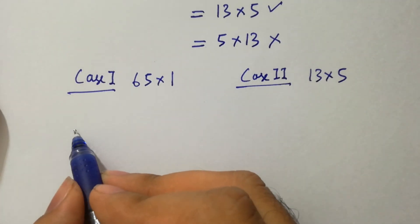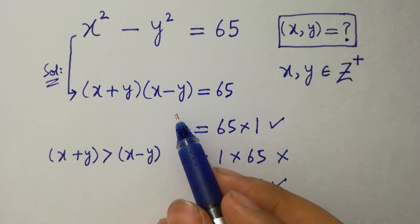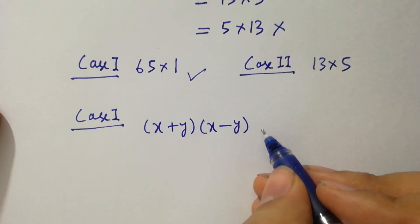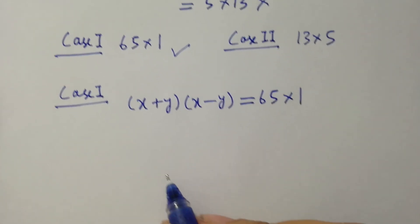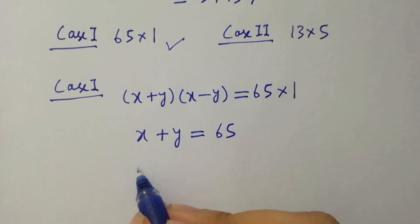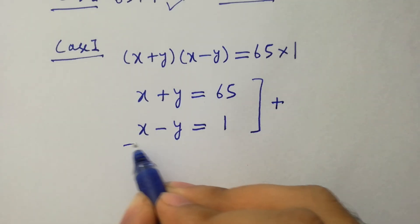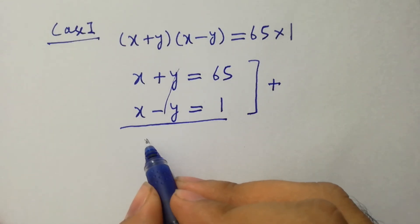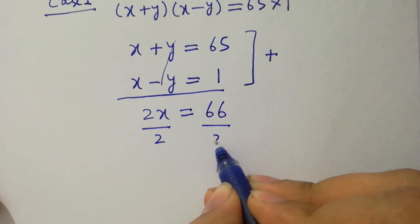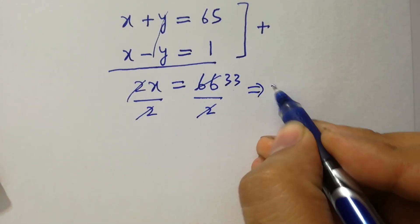First, take case one, which is 65 times 1. We have x plus y and x minus y equal to 65 times 1. By comparing: x plus y equals 65 and x minus y equals 1. Add them — y cancels, x plus x is 2x, equal to 65 plus 1 is 66. Divide by 2 on both sides — 2 cancels, and 2 times 33 is 66. So x equals 33.